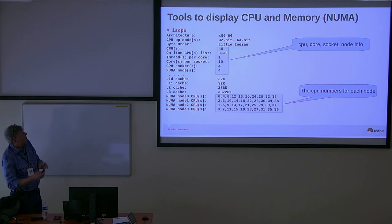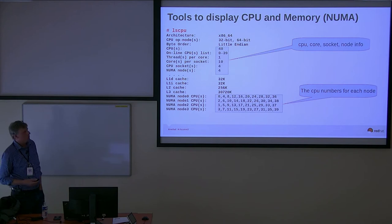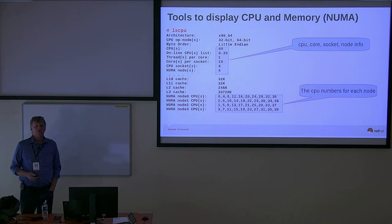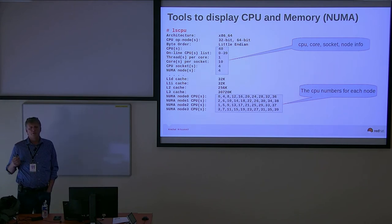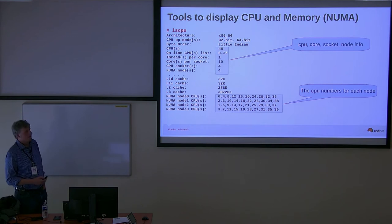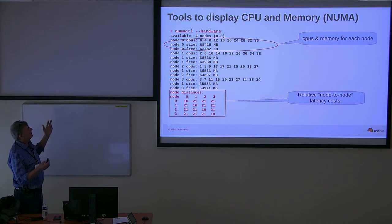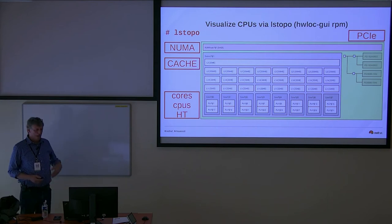Tools to display CPU and memory: LSCPU tells you the architecture, how many CPUs are in each node, and the amount of memory per node. NUMACTL --hardware tells you the nodes, CPUs on the node, memory sizes, and where memory is. LSTOPO provides a pictorial view of the same information. Most of the time you do this level of tuning for high-performance benchmarks. In later systems the kernel does most of the work automatically.